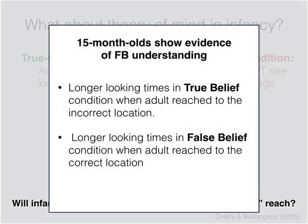What they found was that there were longer looking times in both the true belief and the false belief condition, depending on whether or not the adult performed a surprising reach. These results suggest that toddlers may already have some understanding that other people act on the basis of their beliefs, and that these beliefs may or may not accurately reflect the true state of the world.